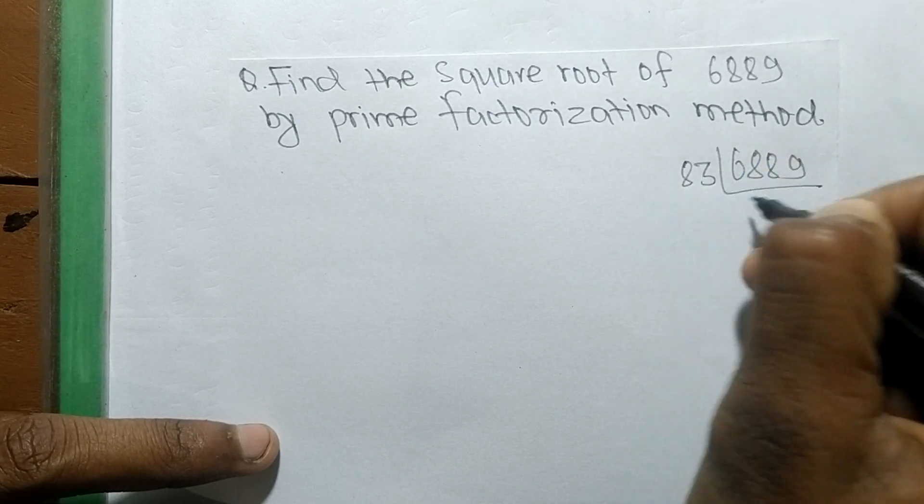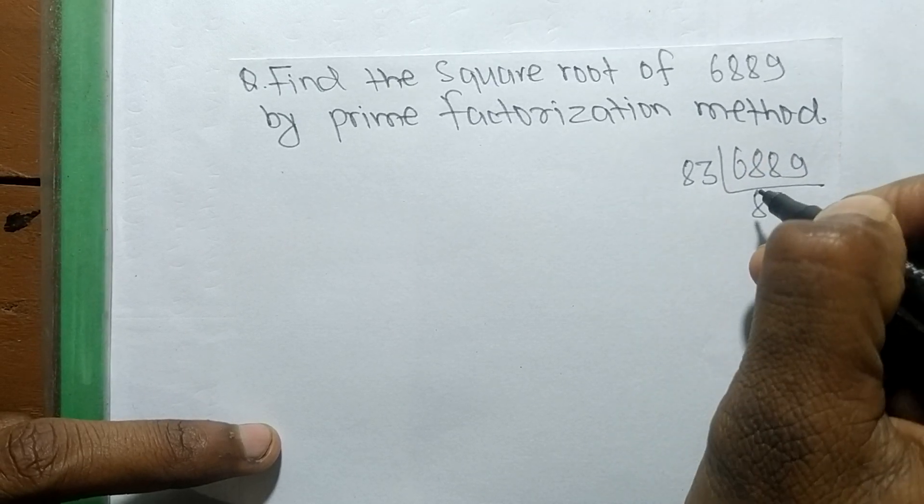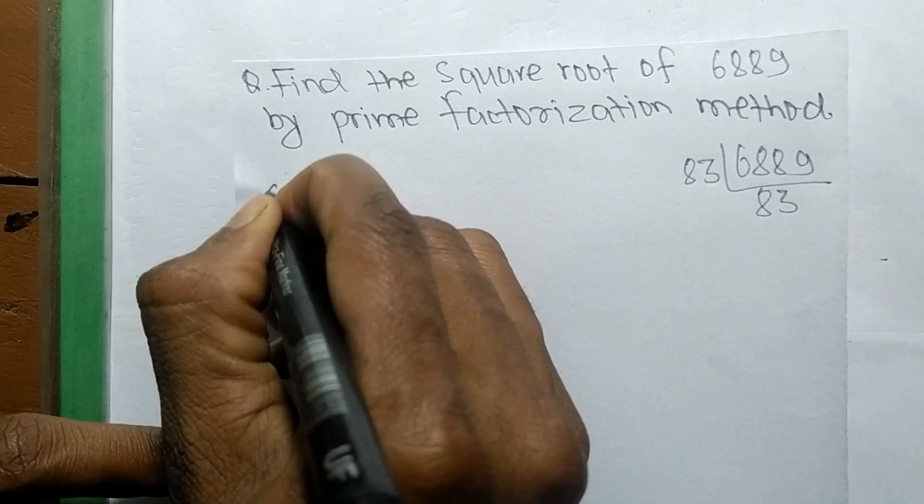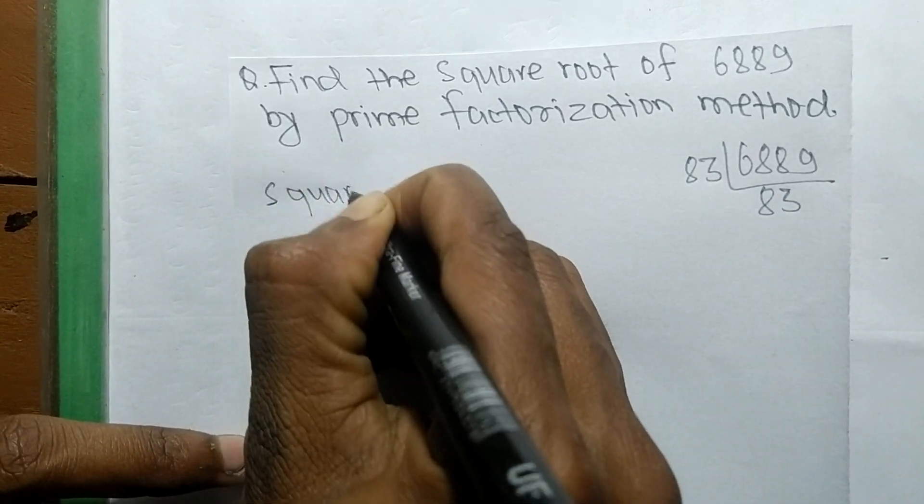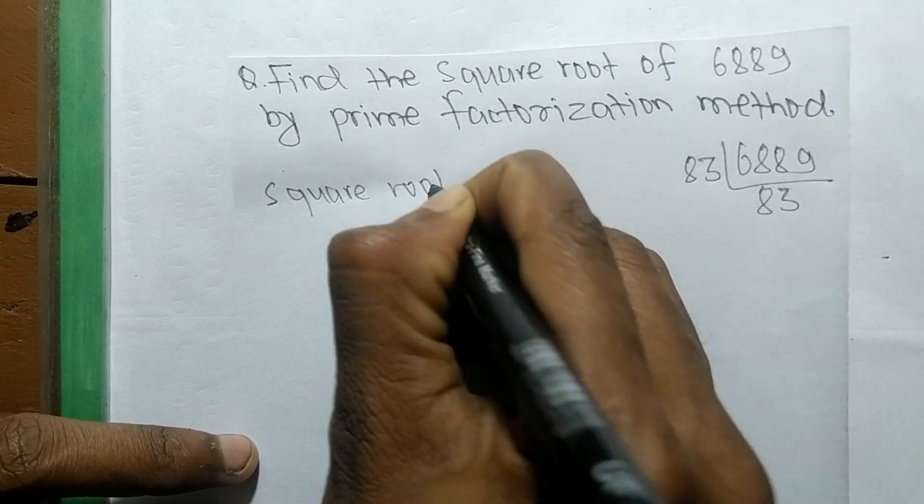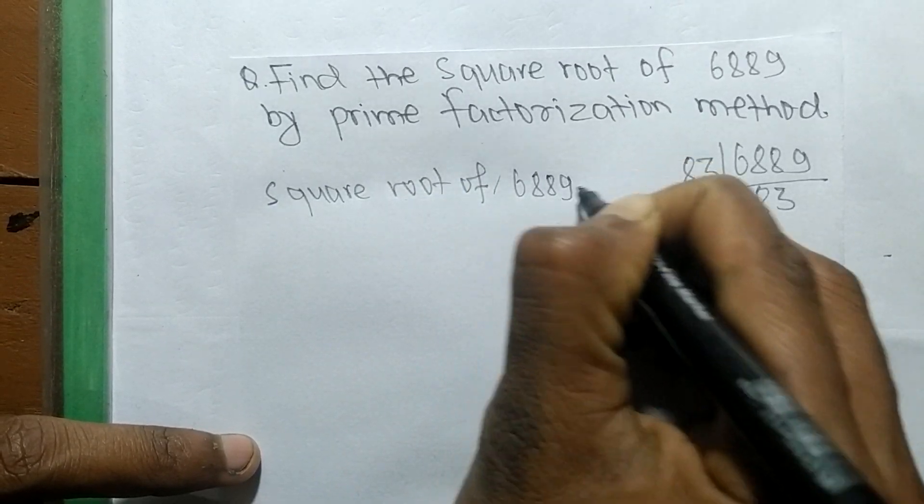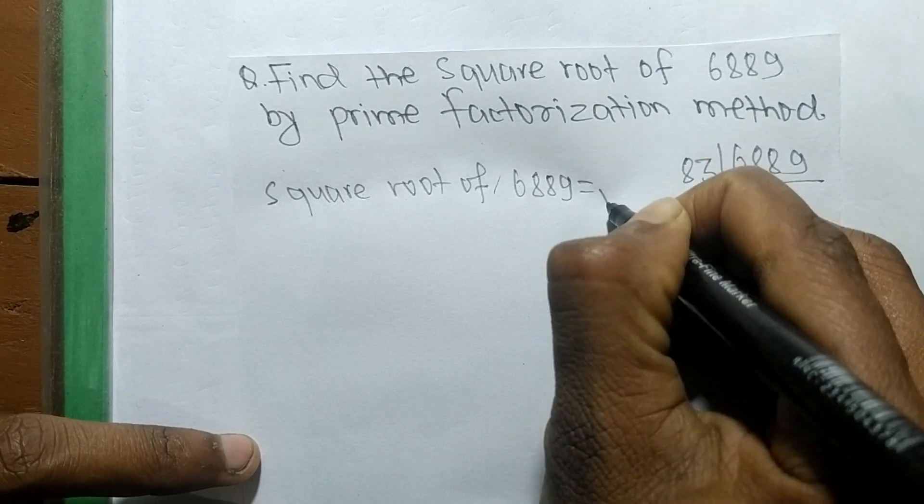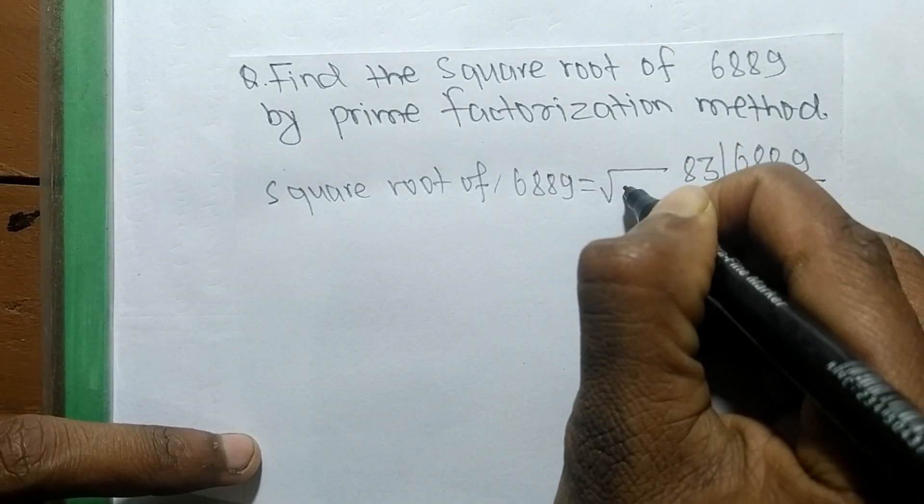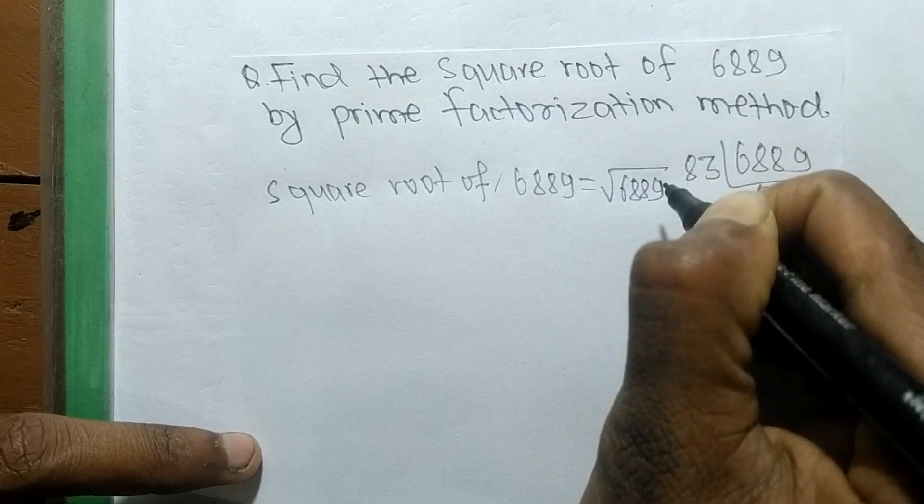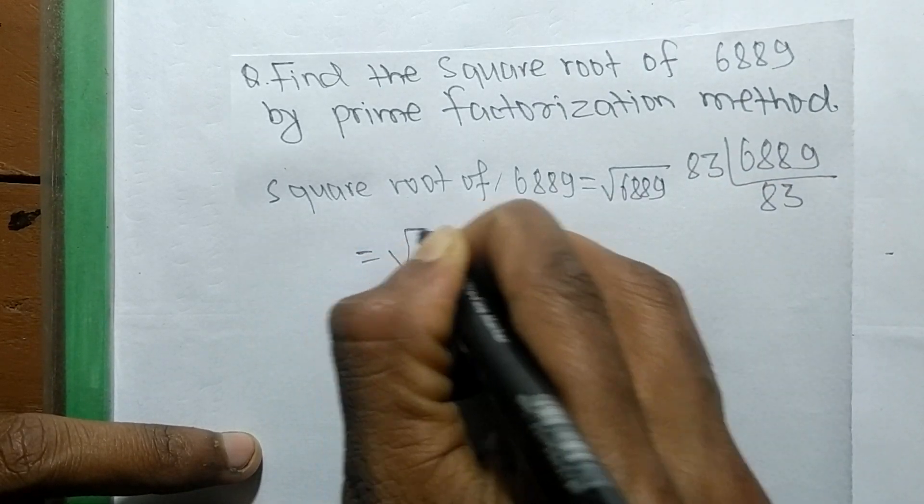So its prime factor is 83 times 83. So now you find the square root, so square root of 6889 is equal to this sign is the sign of a square root and 6889.